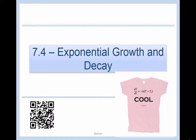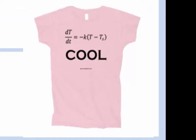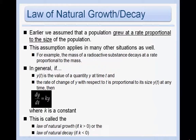7.4 Exponential Growth and Decay — our last section that we need to cover for the AP exam. Earlier we assumed that population grew at a rate proportional to the size of the population. This assumption applies in many other situations as well. For example, the mass of a radioactive substance decays at a rate proportional to the mass.